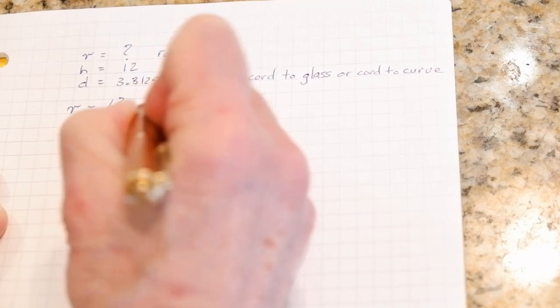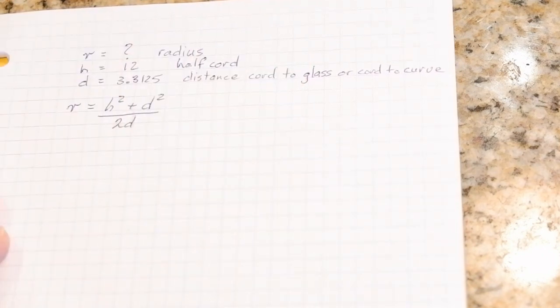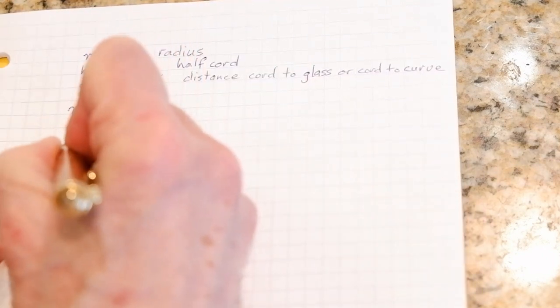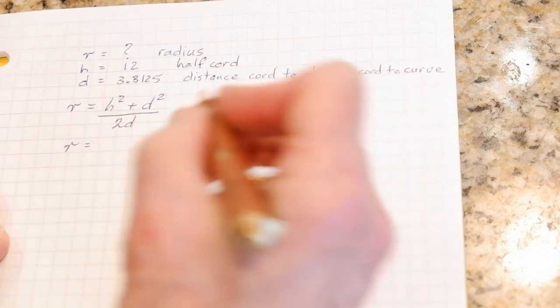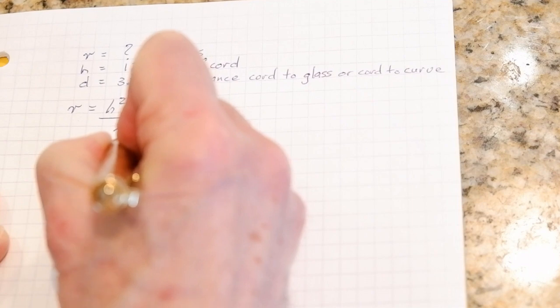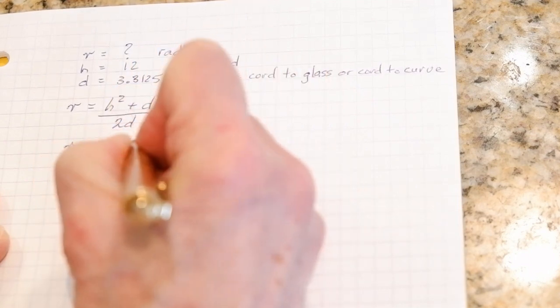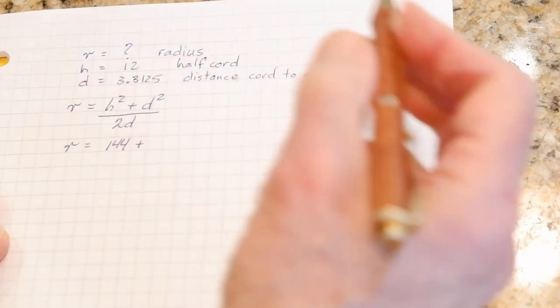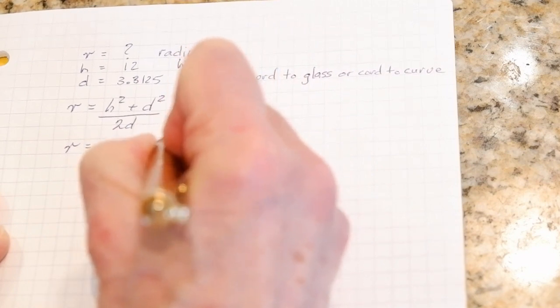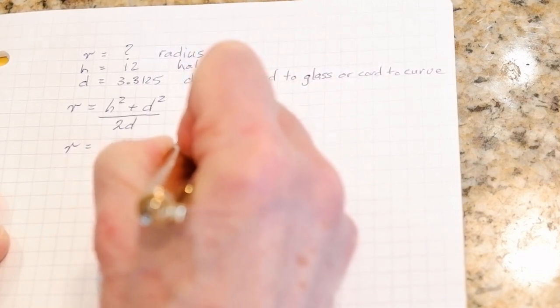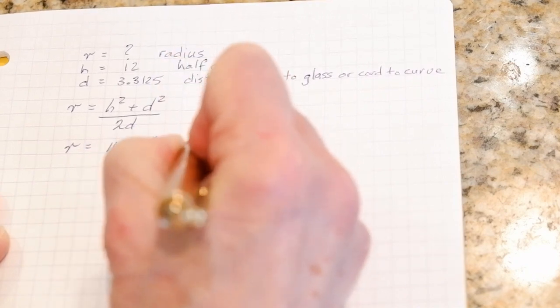H squared—so that's 12 times 12, that's 144—plus D squared. I don't know what that is just yet, so I'll just write it down here: 3.3125 squared.